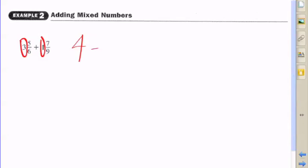Okay, the way that I prefer to add mixed numbers is add any whole parts together first. As you can see, I've added three and one, okay, and then I'll worry about adding five sixths and seven ninths.